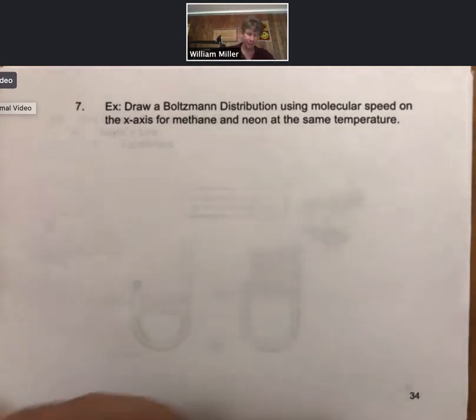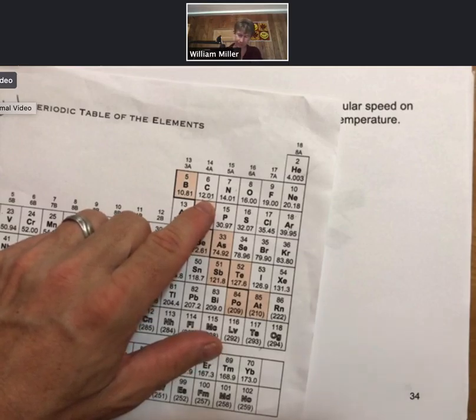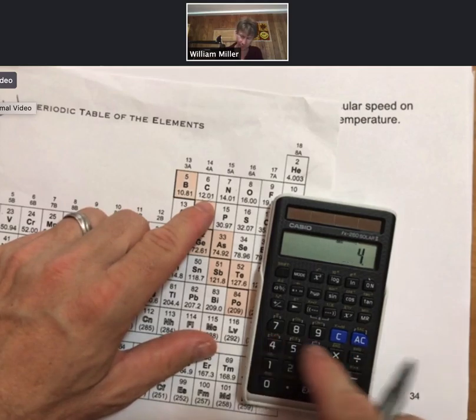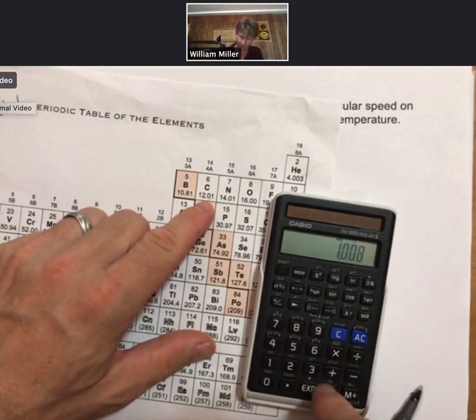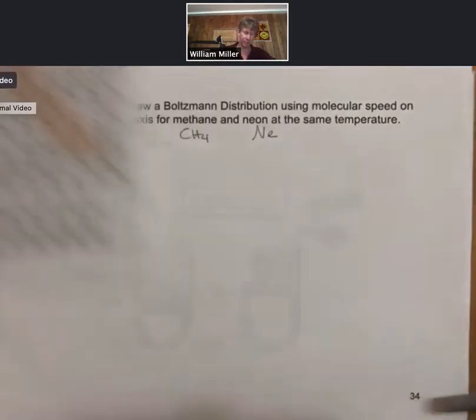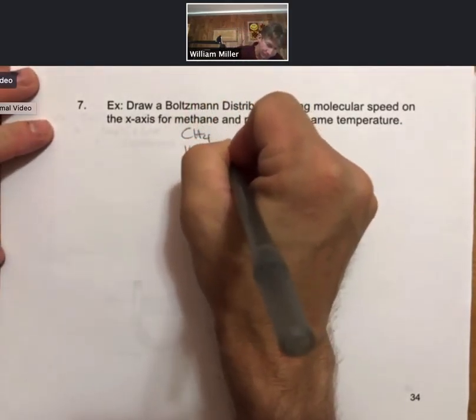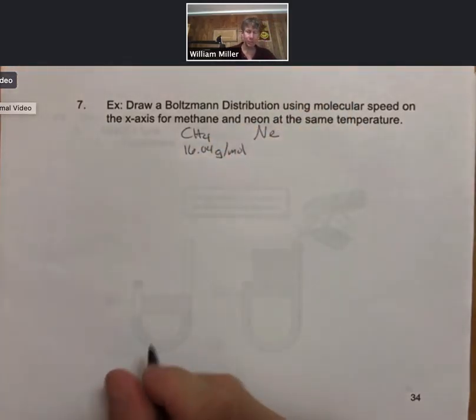CH4, if we look at our periodic table, is going to be 12.01 for one carbon plus 4 times 1.008, 16.04 grams per mole, while neon will be 20.18.